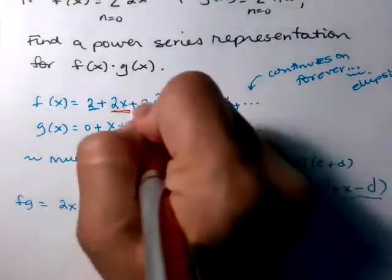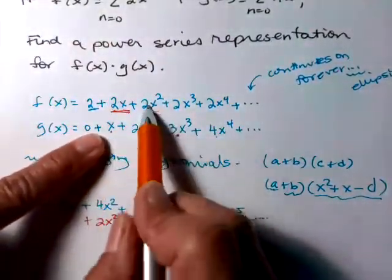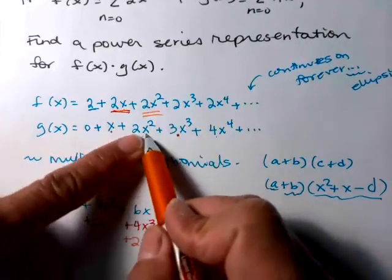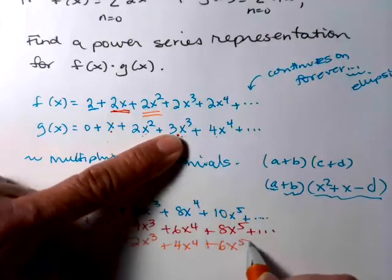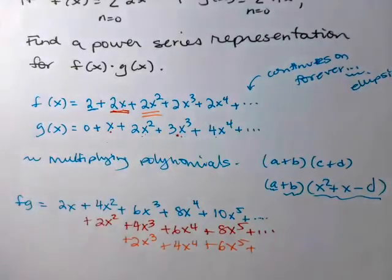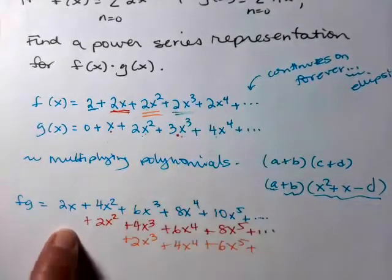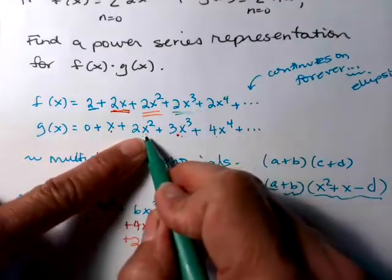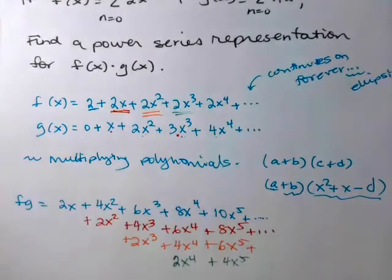Let's grab the next one. The 2x² is going to multiply everybody. 2x² times x will be 2x³. 2x² times 2x² will be 4x^4, 6x^5. Now we'll grab that 2x³ and take it through. 2x³ times x will be 2x^4. 2x³ times 2x² will be 4x^5. I think that is good enough.